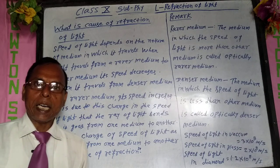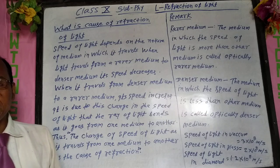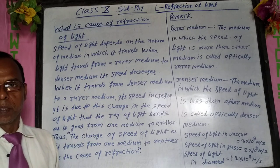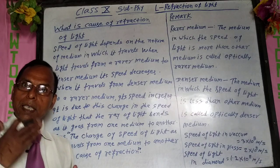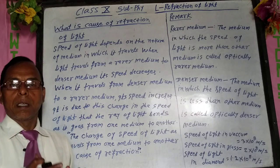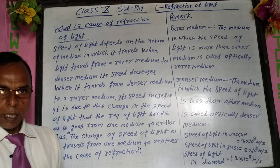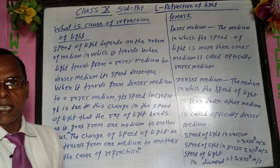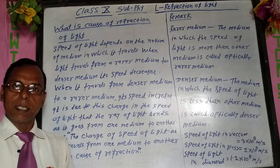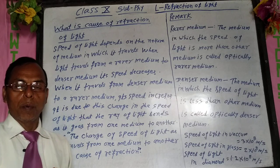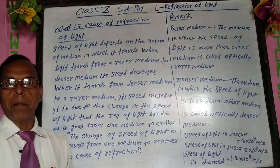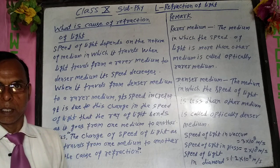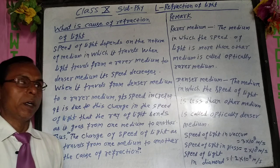When a ray of light travels from denser medium to rarer medium, then the speed of light increases. When light passes from one medium to another medium, then the speed of light changes. This is the reason why it changes its path, and this is the reason for refraction.